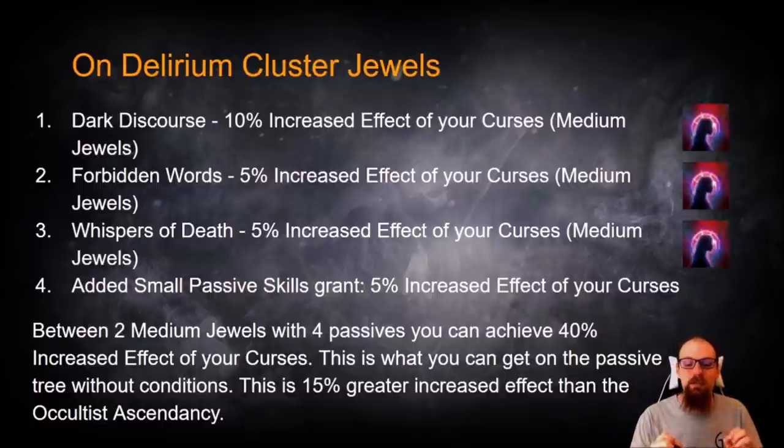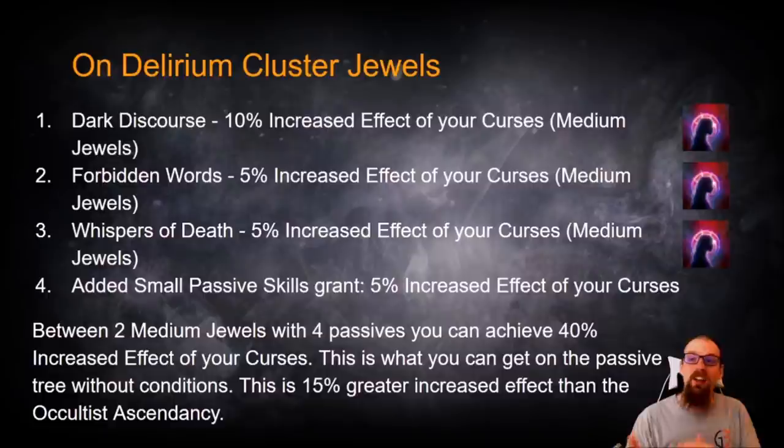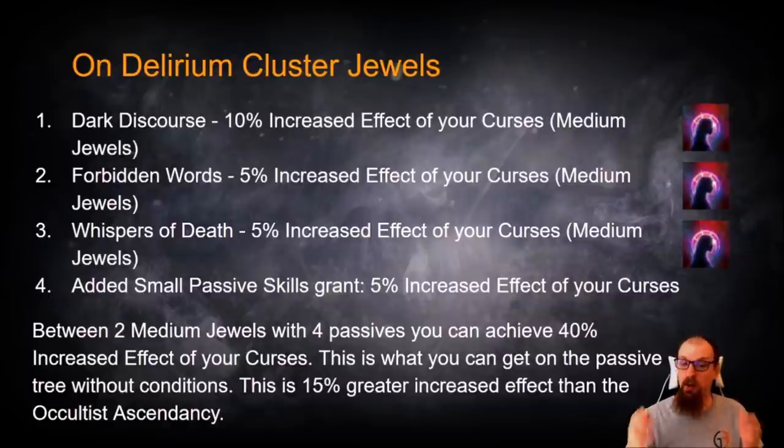This is 15% greater increased effect than the Occultist Ascendancy, which is already another 15% better than the Scion Ascendant version of the Occultist. In other words, Delirium Cluster Jewels for increasing the effect of your curses is simply bonkers when compared with previous available levels of power for boosting your effect of curses.